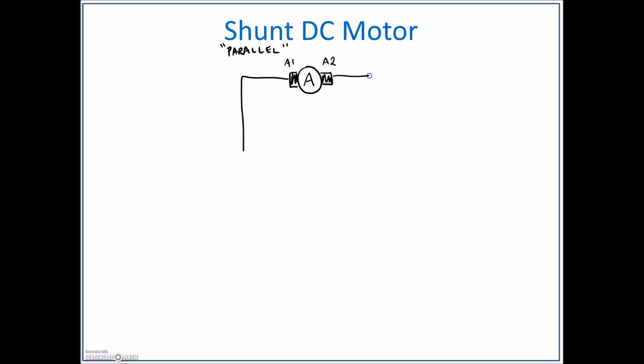The brush leads are always labeled A1 and A2. I'm going to take those leads and bring them down. I'm going to connect them up to my source. I'm going to arbitrarily choose a positive here and a negative here to match with the previous diagram for the series motor.